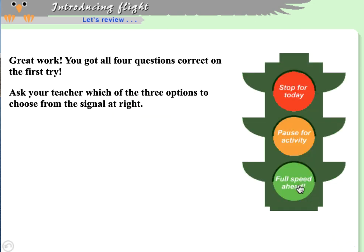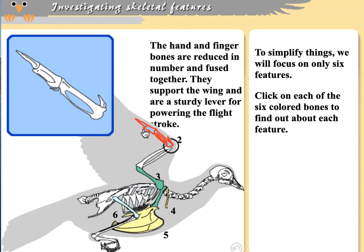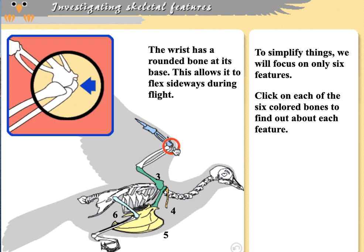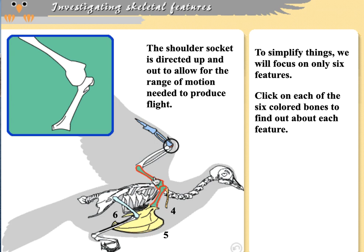Now let's look at flight features of birds. First, hand and finger bones in birds are reduced in number and fused together — a key characteristic of bird anatomy. We also have the semi-lunate wrist bone we discussed. The shoulder socket is directed upward and outward to allow for the kind of flight motion birds have, distinctly different from ground-walking reptiles where the shoulder socket faces downward.